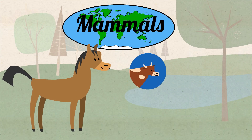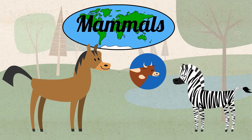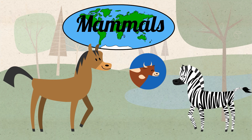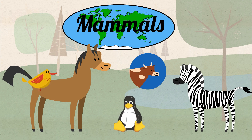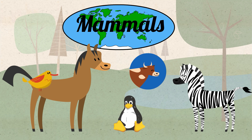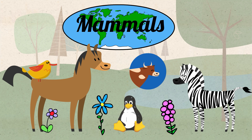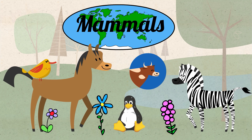Although the first mammals appear in the Mesozoic Era, they begin to thrive during the Cenozoic Era and spread throughout the world. Birds become much more diverse and also spread throughout the world. Flowering plants also thrive and spread throughout the world.